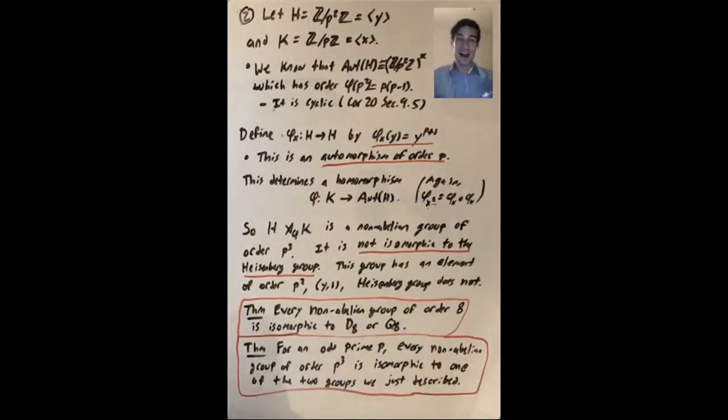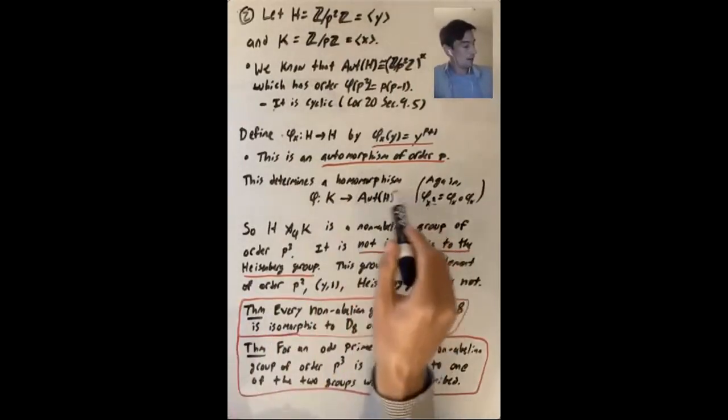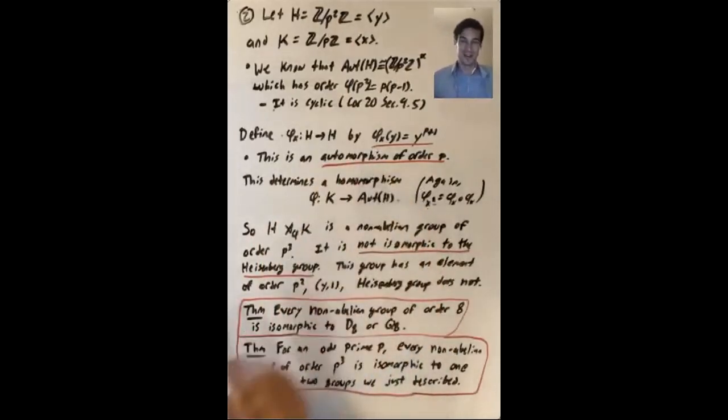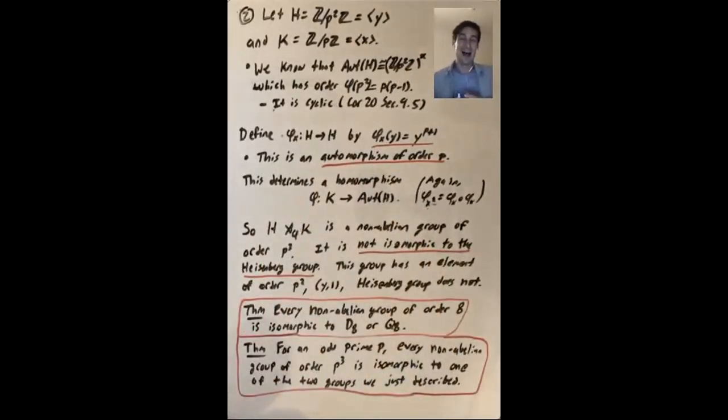But every non-abelian group of order p cubed is isomorphic to one of the two groups that we just described, either the Heisenberg group over Z mod pZ or this group. So I won't put a full proof of that up, but it's not so difficult to do given the tools that we currently have.